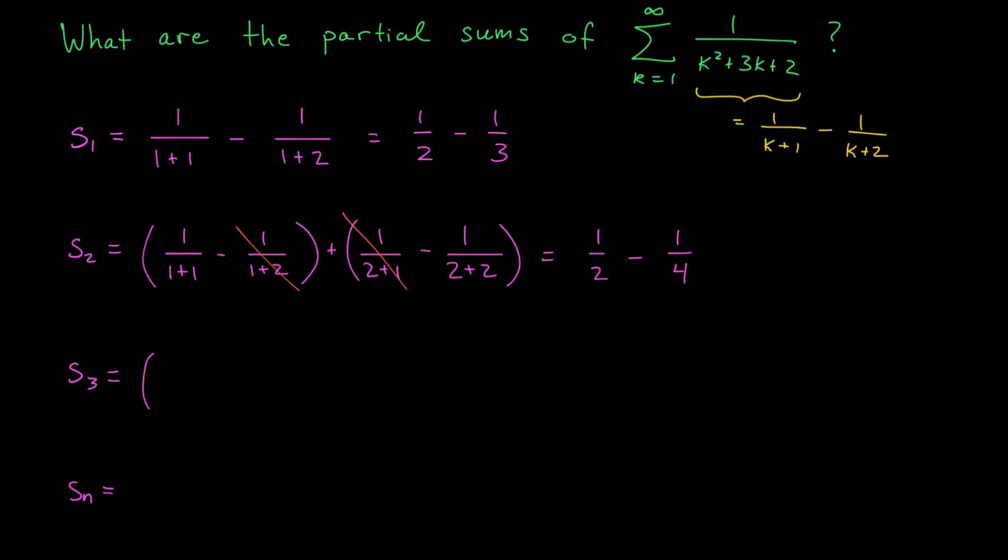Will the same thing happen with s3? Well, let's see. The first term is 1 over 1 plus 1 minus 1 over 1 plus 2. The second term is 1 over 2 plus 1 minus 1 over 2 plus 2. And the third term is 1 over 3 plus 1 minus 1 over 3 plus 2. Sure enough, we get the same sort of cancellation. Here we have minus 1 third and plus 1 third. Here we have minus 1 quarter and plus 1 quarter. After all the terms in the middle die, we're just left with 1 over 2 minus 1 over 5. Oh, now I think you can start to see a pattern. You can probably even guess what the nth partial sum is going to be. But let's write it out just to be sure.